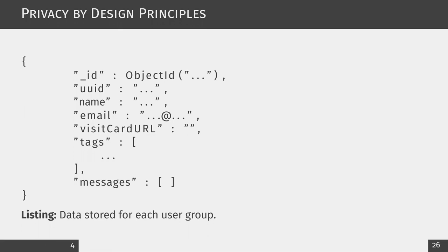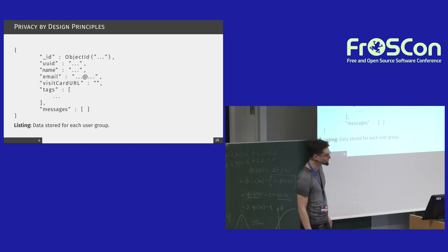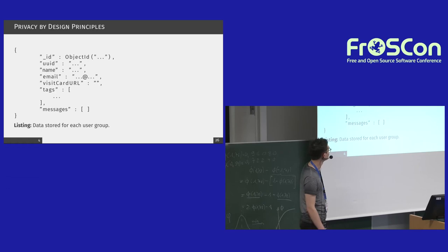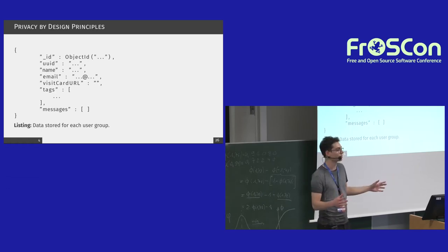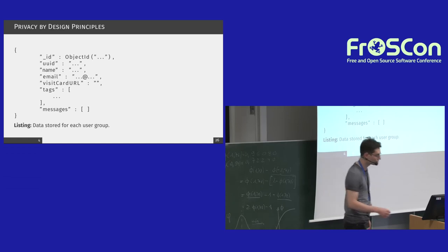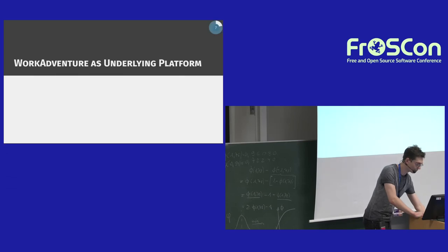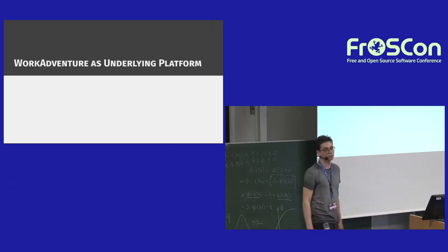The email is also only used as an identifier — we use a UUID at the domain where the laboratory runs. Some other fields like visit card URL or messages are things we don't use. The tags field is basically an array of strings used to determine access rights to the maps of our world.